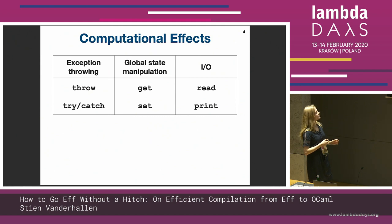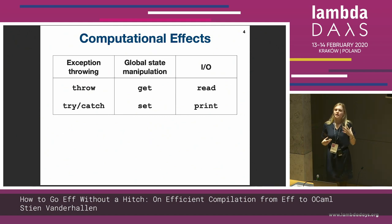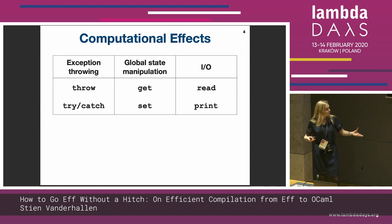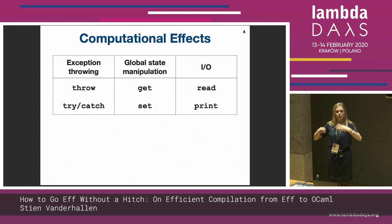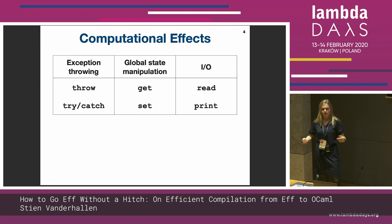Then we have global state manipulation as a second example, and there we use operations like get and set to respectively read from or write to global storage or global variables.